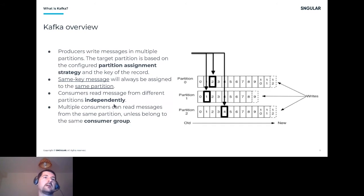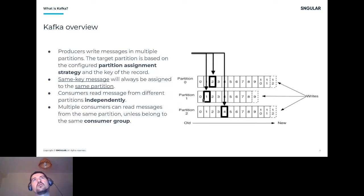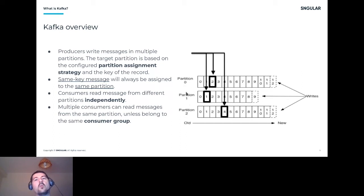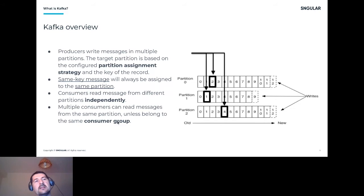Consumers read messages from different partitions independently. A consumer can read from multiple topics; within topics we have partitions, and there can be one or more consumers reading the same partitions and topics at the same time, each at their own pace. When we have a topic with many partitions and want to split the load across multiple applications, we use what Kafka calls a consumer group.